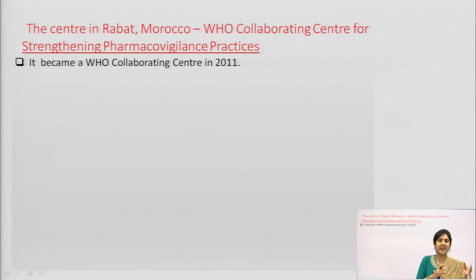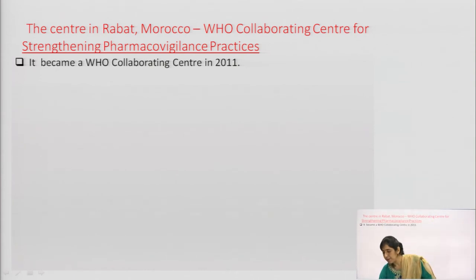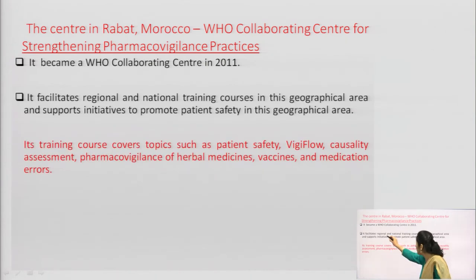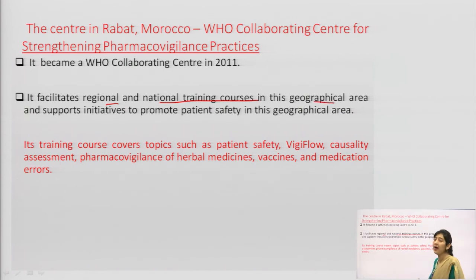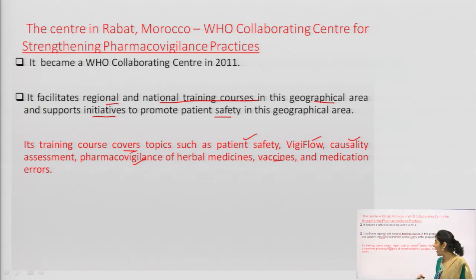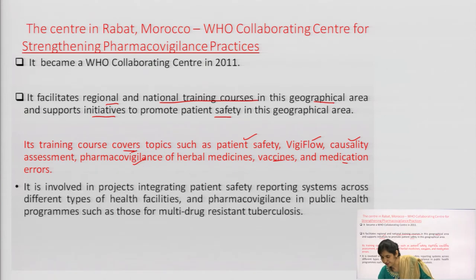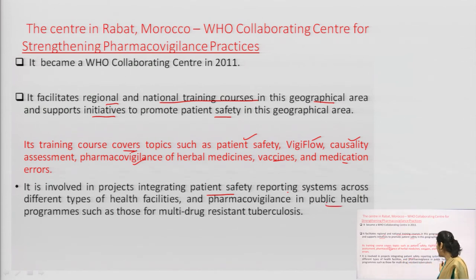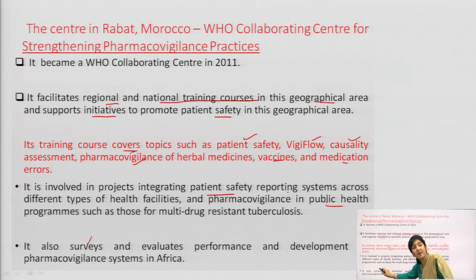Now we understand UMC. Next, the Rabat centre — it is a WHO Collaborating Centre for strengthening pharmacovigilance practices. It became the collaborating centre in 2011. It facilitates regional and national training courses in its geographical area and supports initiatives to promote patient safety. Topics covered include patient safety, VigiFlow, causality assessment, pharmacovigilance of herbal medicines, pharmacovigilance of vaccines, and pharmacovigilance of medication errors. It is involved in projects integrating patient safety reporting systems across different types of health facilities and pharmacovigilance in public health programs such as multi-drug resistant TB. It also conducts surveys and evaluates performance and development of pharmacovigilance systems in Africa.